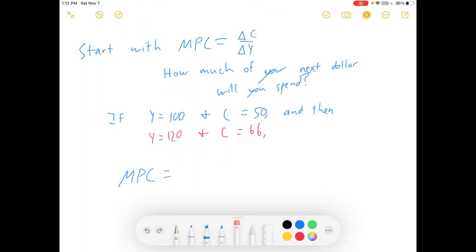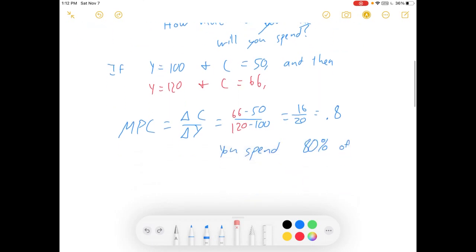Then what's your marginal propensity to consume? MPC is equal to change in consumption over change in income, which is equal to 66 minus 50, that's new minus old for consumption, divided by 120 minus 100, that's new minus old for income, is equal to 16 over 20, is equal to 0.8, suggesting that you spend 80% of your next dollar.